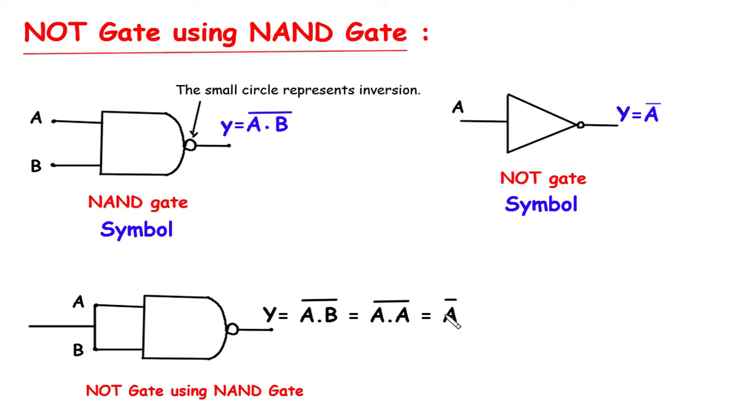Here also Y equals A bar. This is how we can convert NAND gate to NOT gate.